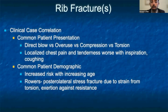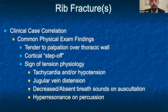Rib fractures are often seen secondary to a direct blow to the chest, but these injuries can be seen secondary to overuse, compression, or torsion. Patients often complain of localized chest pain and tenderness that's worse with inspiration and/or coughing. On physical exam, the patient may be tender to palpation over the thoracic wall. If the rib is displaced, there may be a step-off on palpation of the ribs. You should watch out for signs and symptoms of developing tension pneumothorax.